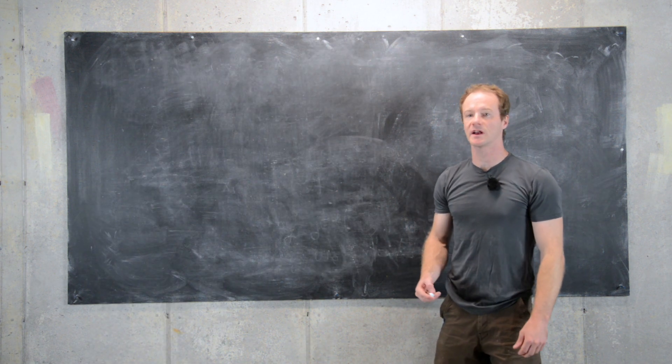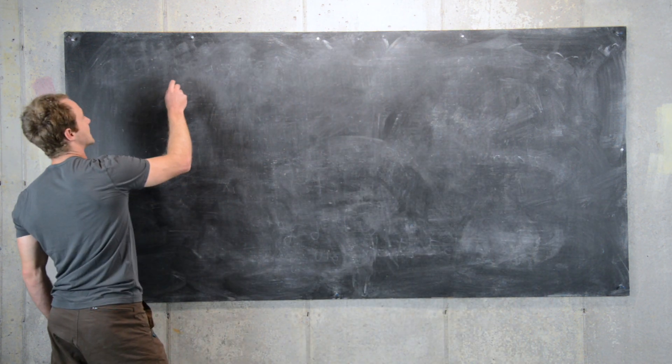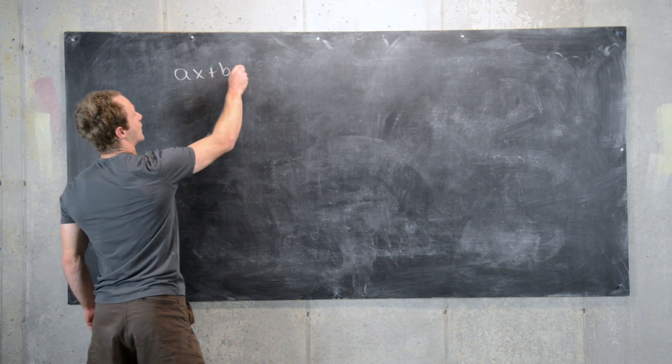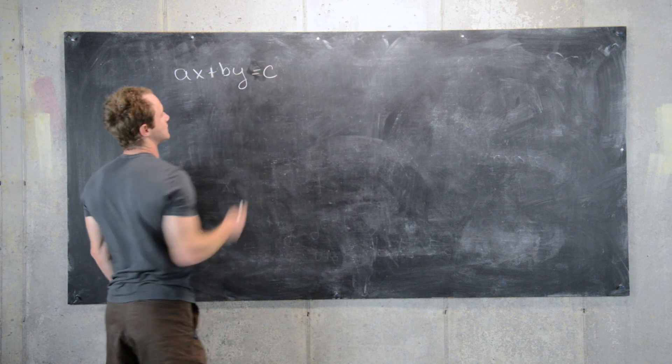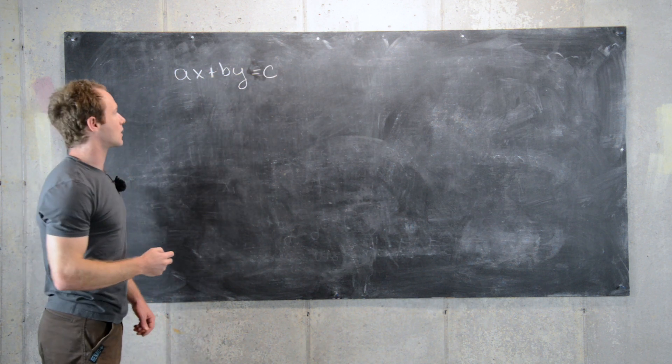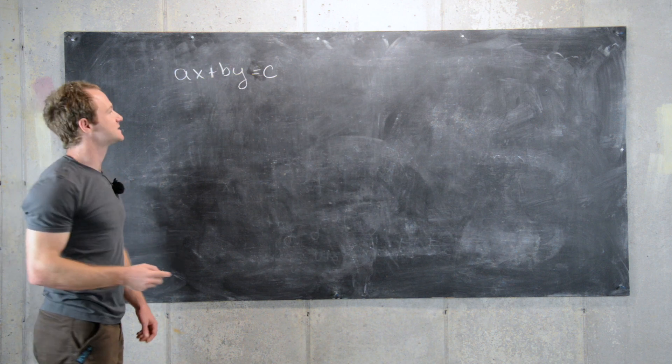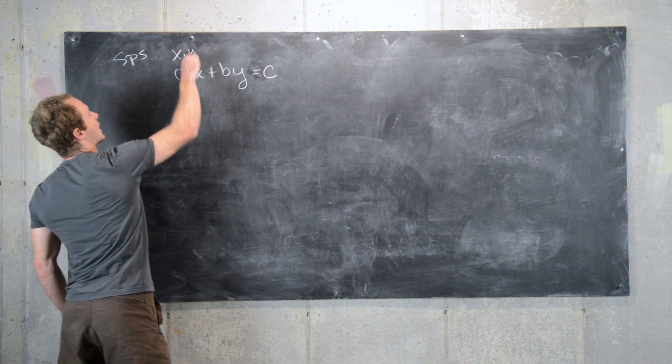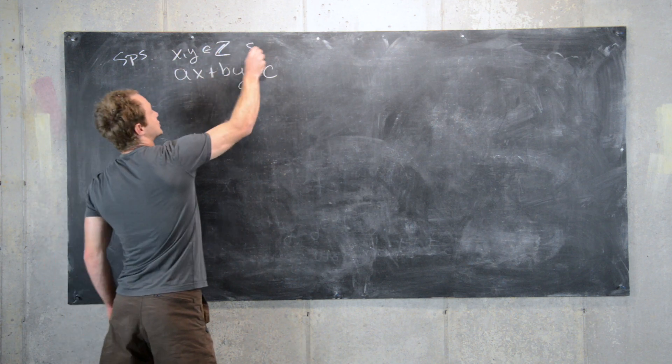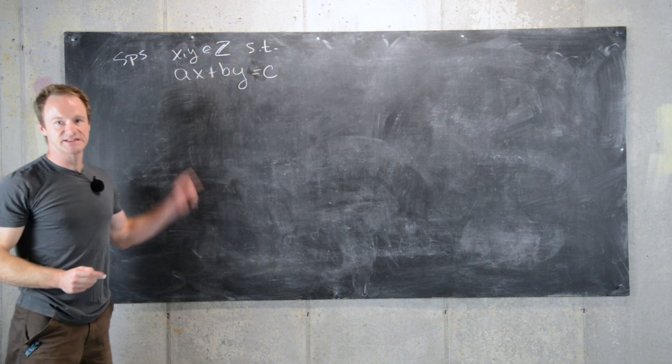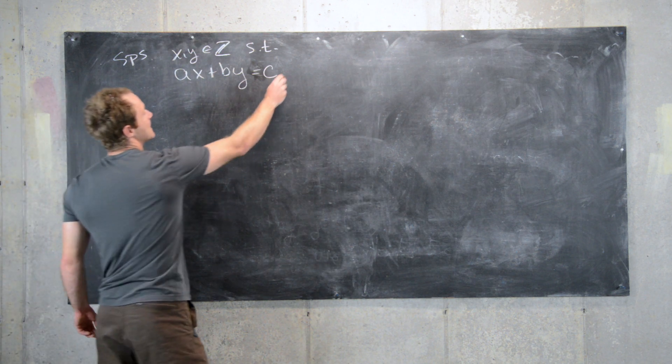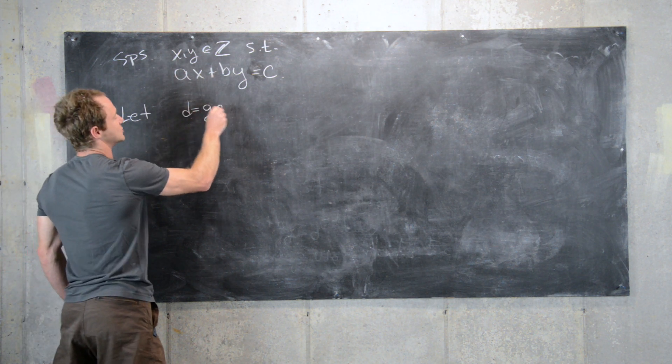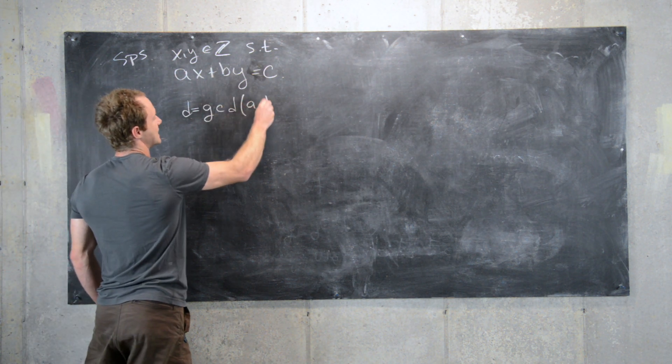Now we'll answer the question: when can we find a solution to ax plus by equals c where a, b, and c are more arbitrary natural numbers? Let's suppose that x and y are in the integers such that this equation exists. And then the next thing we want to do, let's let d equal the gcd of a and b.